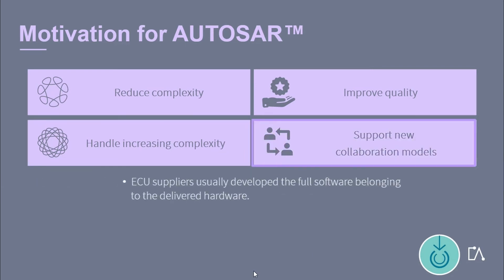In the past, the electronic control unit suppliers usually developed the full software belonging to the delivered hardware. Only in rare cases did suppliers integrate software from the OEM or supply software libraries. The intention of AUTOSAR was to define a clear interfacing concept, thus enabling joint software development. The architectural concepts and the clearly defined interfaces now enable a new way of collaboration between software suppliers, Tier 1 and OEM.